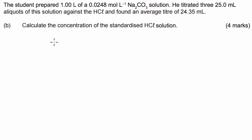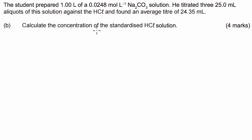G'day guys. I've got a chemistry question today where it's asking us to calculate the concentration of a standardized hydrochloric acid solution. A student prepared a litre of 0.0248 moles per litre sodium carbonate solution. He titrated three 25 ml aliquots of this solution against hydrochloric acid and found an average titration volume of 24.35 ml. Calculate the concentration of the standardized hydrochloric acid solution.